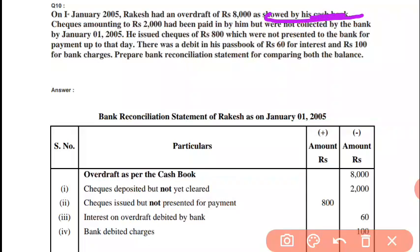Checks amounting to 2,000 had been paid by him but were not collected by the bank. Ab usne check payment kar di, par bank ke dwara collect nahin hua. Jab bank ke dwara collect hoga to minus ho jayega — jab clear hoga, jaise aapne kisi ko check de diya, usne minus nahin kiya, jab minus karega to apne aap kam ho jayega. Isliye minus mein aa jayega.